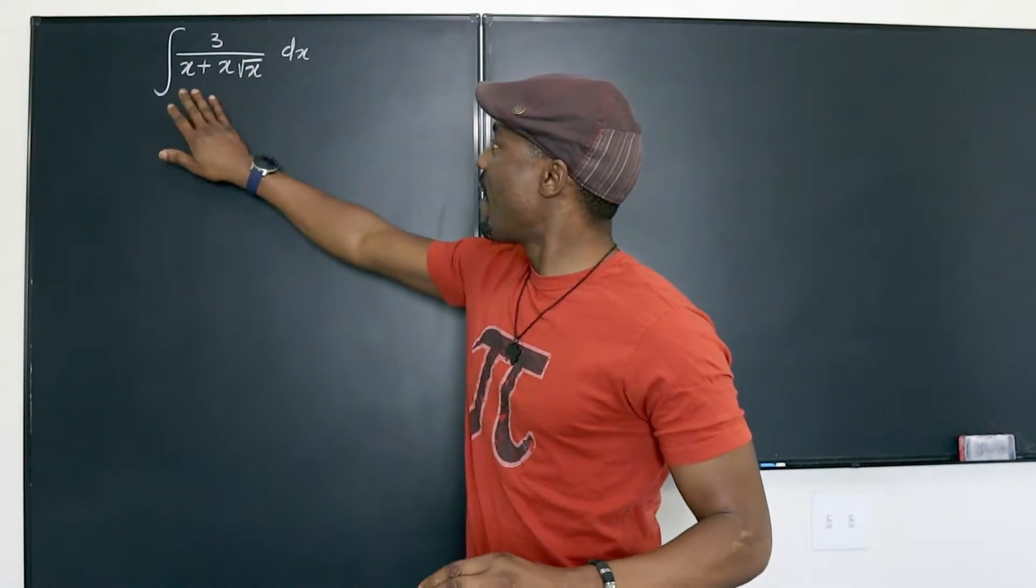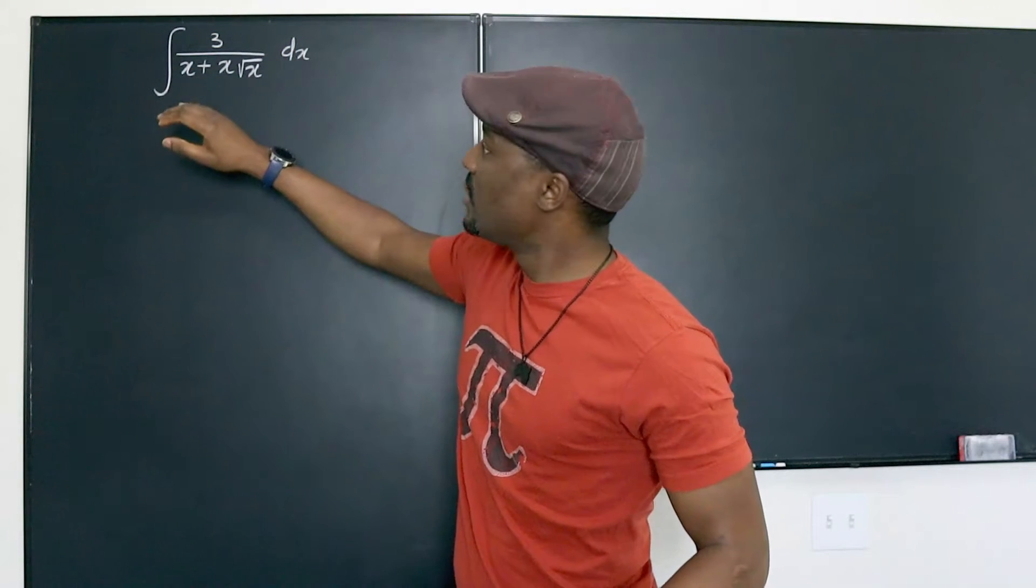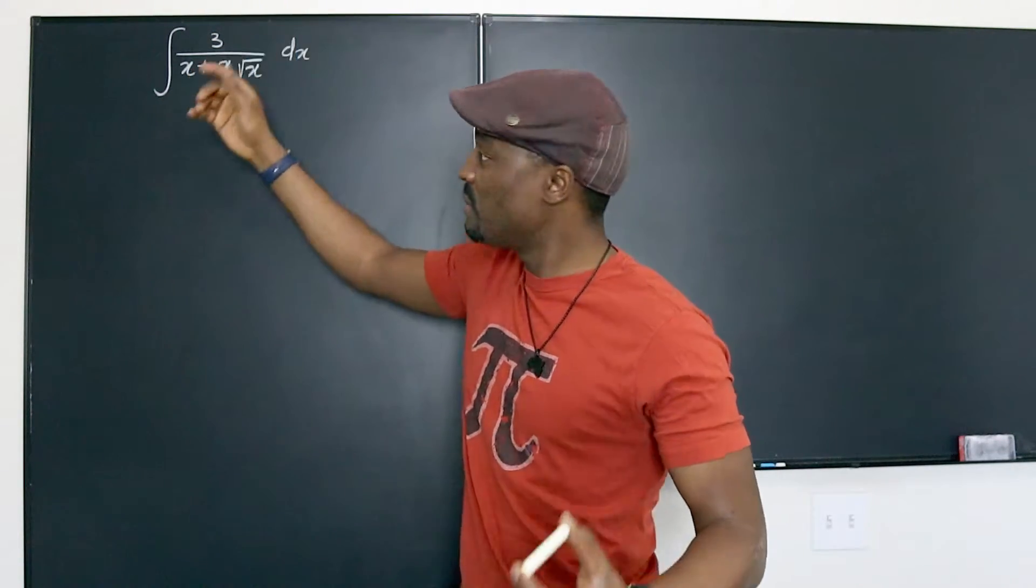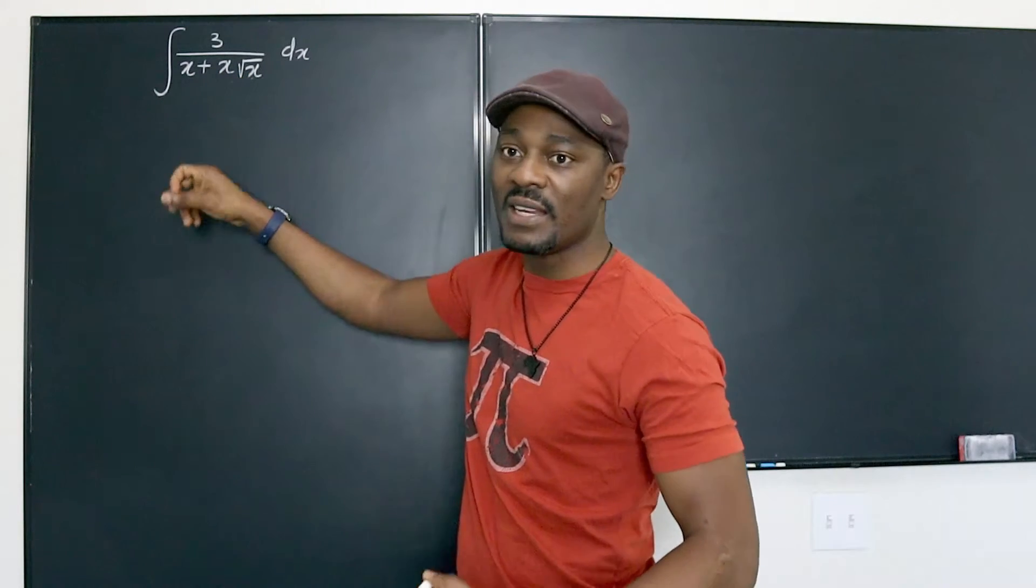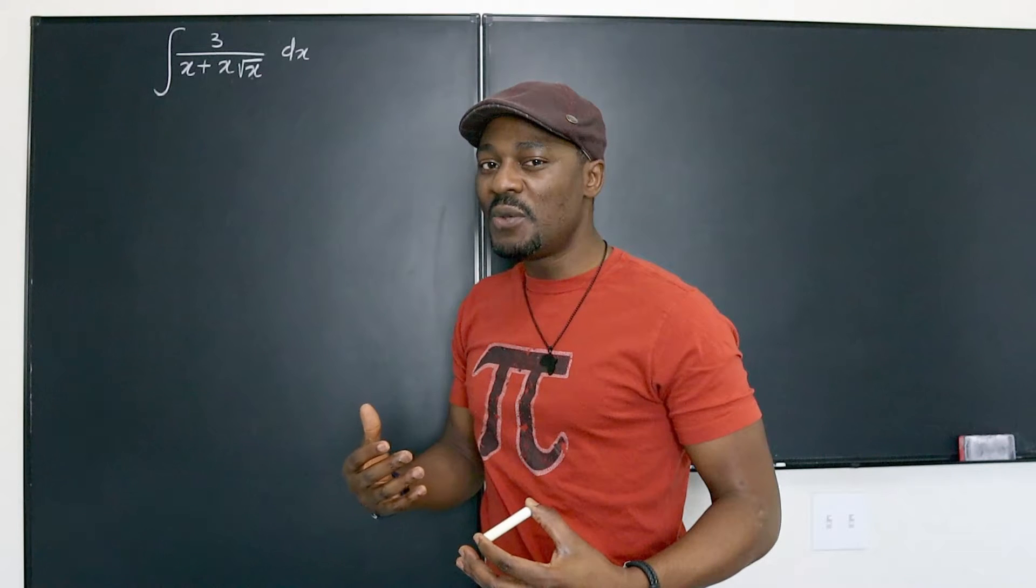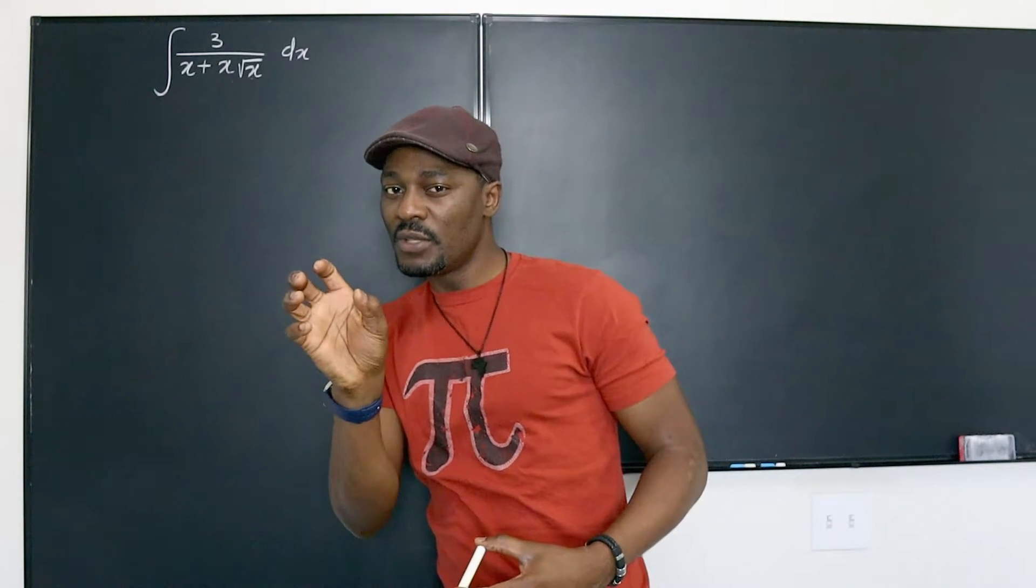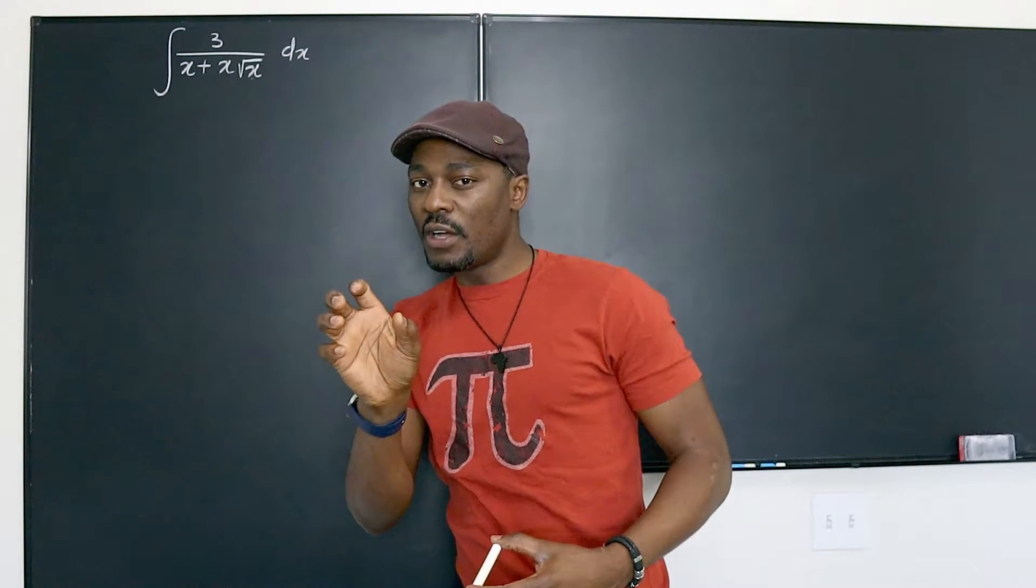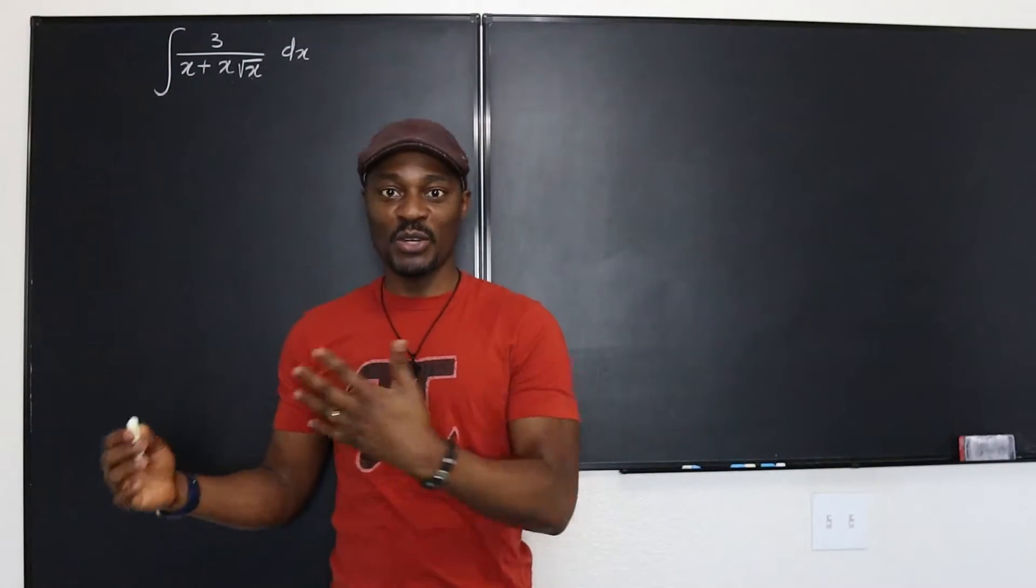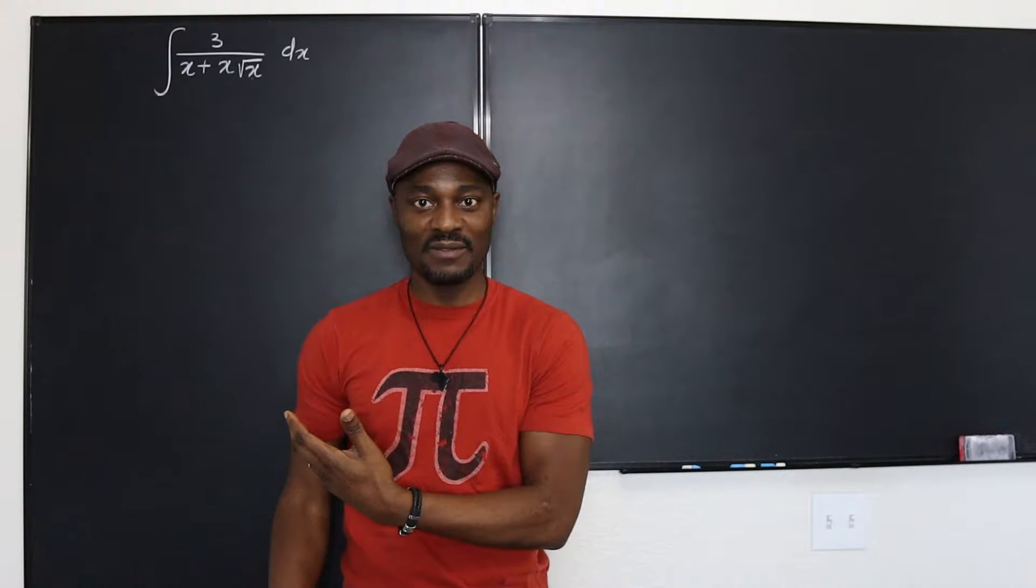What you have is a rational function: 3 over x plus x root x. Some people will just multiply these two together, but I would rather view this as two terms. I'm seeing partial fractions, that's what I'm seeing.